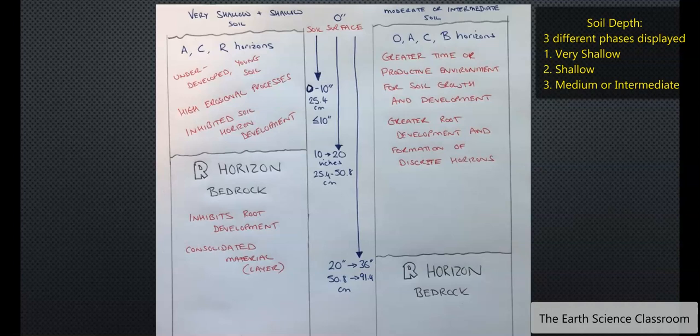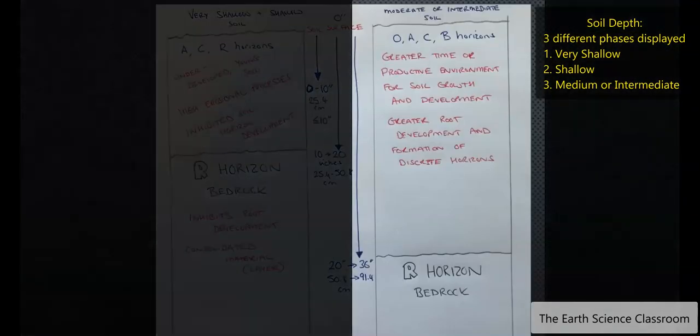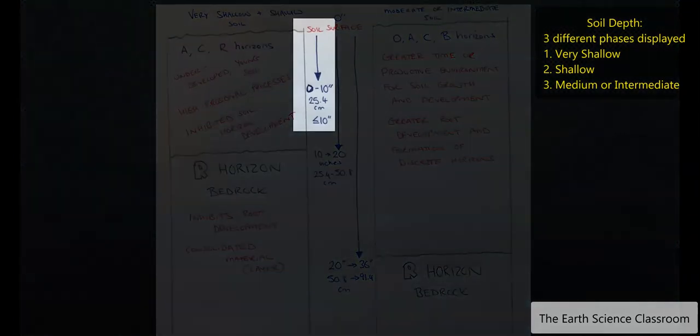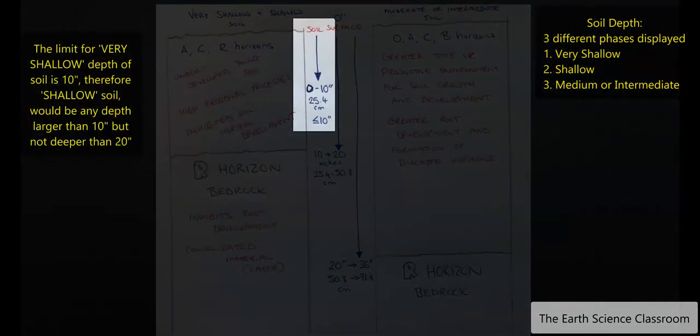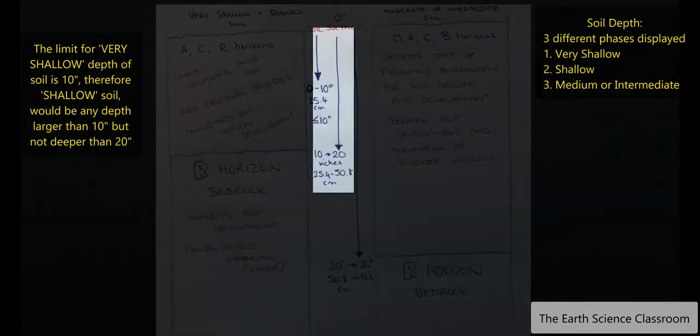So as part of the five phases of soil depth, we have three right here. We have very shallow, shallow soil, and we have moderate or intermediate soil. This diagram shown on the left hand side is the very shallow and shallow soil depths, which includes these two different profiles. And we have the moderate and intermediate on the right hand side. Now in the middle, I have an example of depths. So very shallow soil would have obviously from zero inches or zero centimeters down to around 10 inches. That's around 25.4 centimeters. So it's basically less than 10. It's very shallow soil.